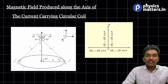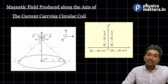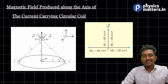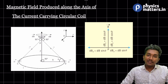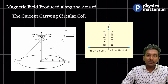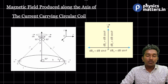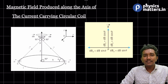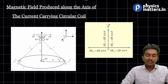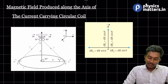Hello everyone. Now we are going to talk about the magnetic field produced along the axis of a circular coil. It's very easy. For the CBSE exam, the straight current carrying conductor is qualitative only — the derivation is not required. But here, the derivation for the circular coil is required, and it's very easy to understand.